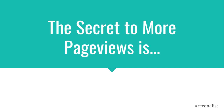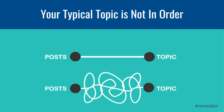For bloggers in any niche, the number one best source to increase your page views today is your reader. But first, let's think about a typical topic on your blog. Your typical topic is not in order. How did that happen? Maybe the posts published are too general. Maybe they are random and not in sequential order. Maybe they require an advanced skill set that your new reader just can't follow. However it got there, your topic does not have a beginning, middle, or an end. Therefore, the topic has an incomplete storyline.